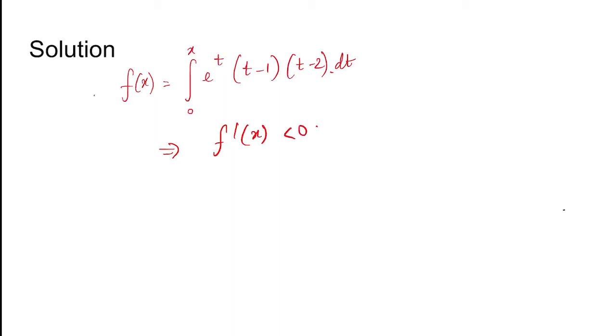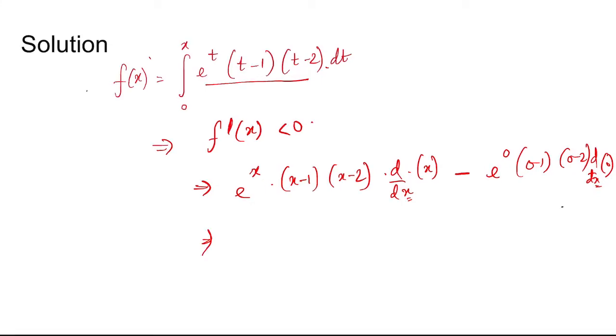f'(x) should be negative. Now f'(x), I told you, just put the limits here and differentiate the limits. First, put the upper limit and then differentiate the limit, and minus the lower limit we put and then differentiate the limit with respect to this variable x. This is coming equal to e to the power x, (x minus 1)(x minus 2), so this should be less than 0.